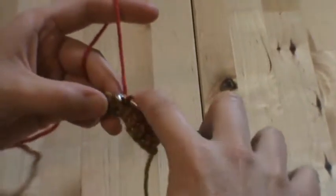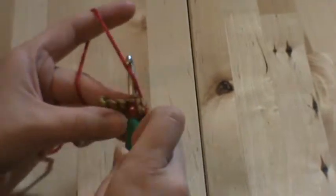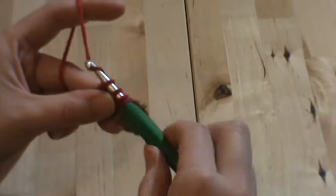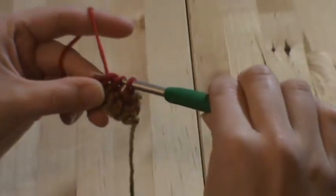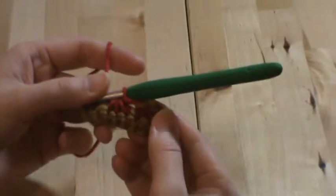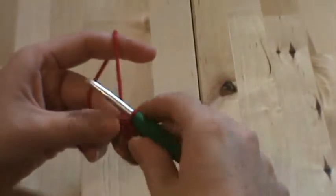Go through the third stitch. Pull up a loop. And you have four on your hook. And then you yarn over and pull through all four loops. And you have another single crochet three together.